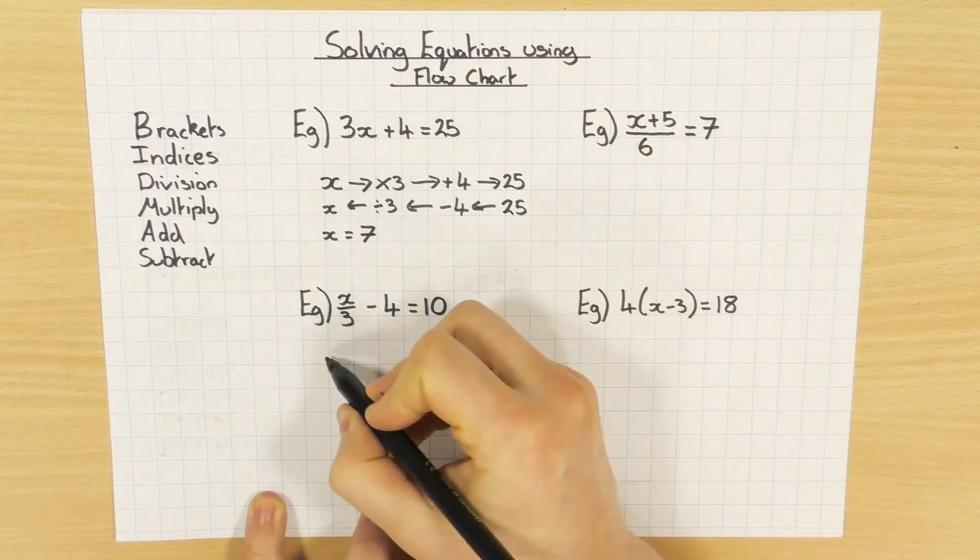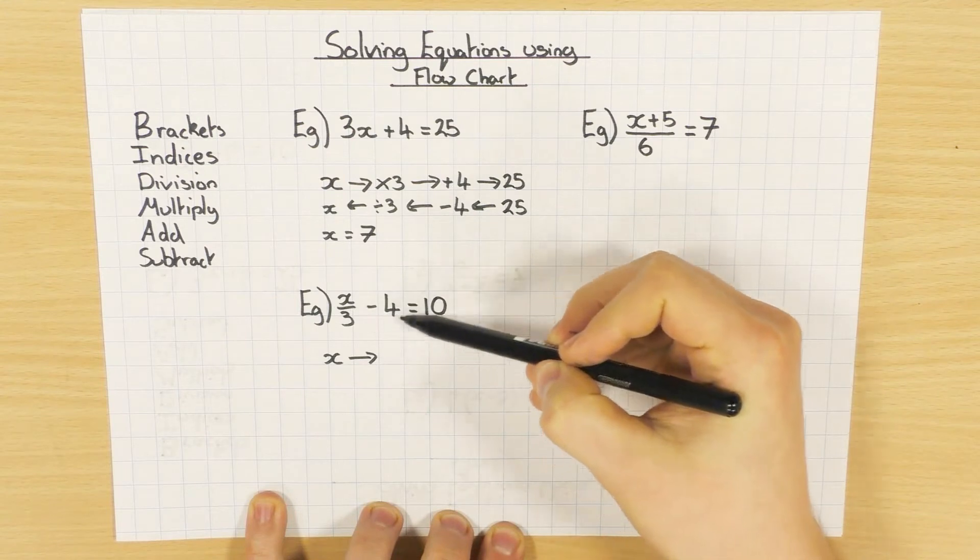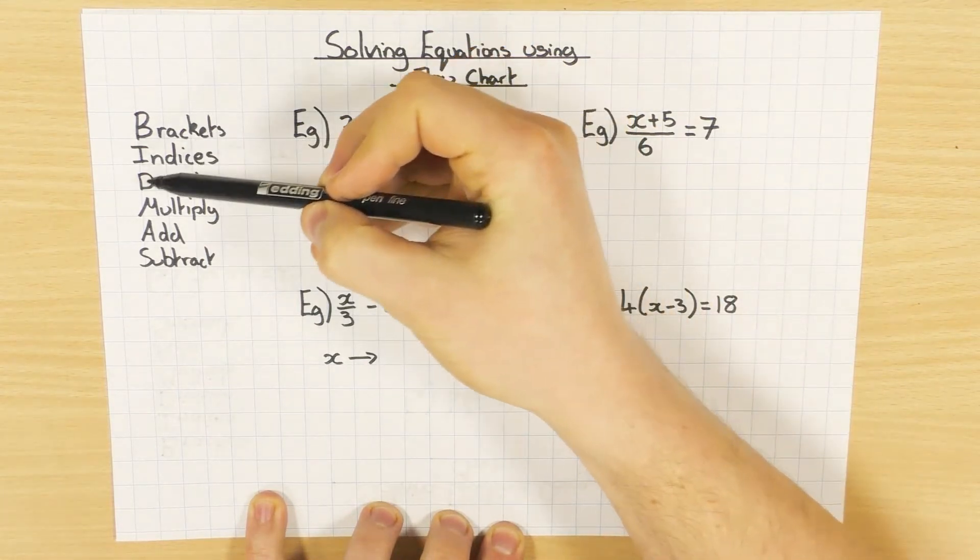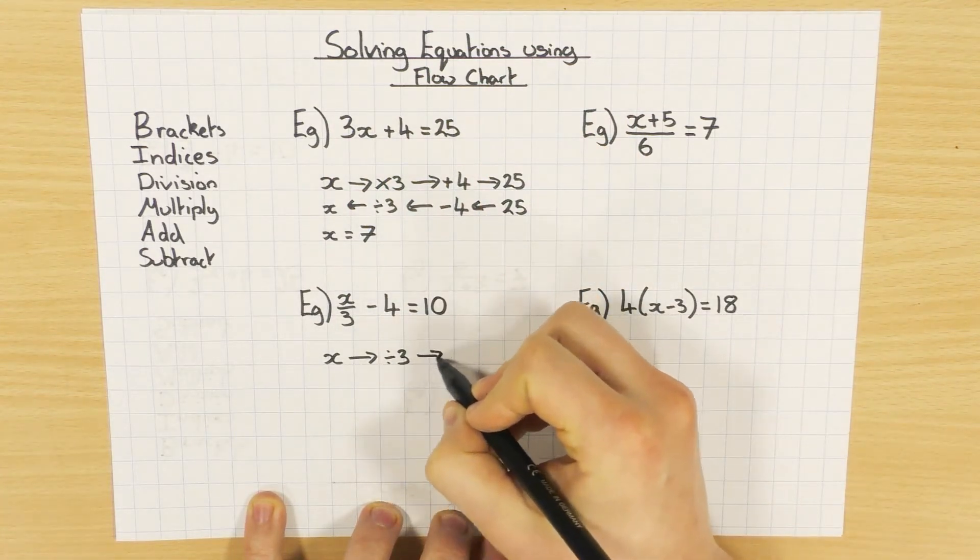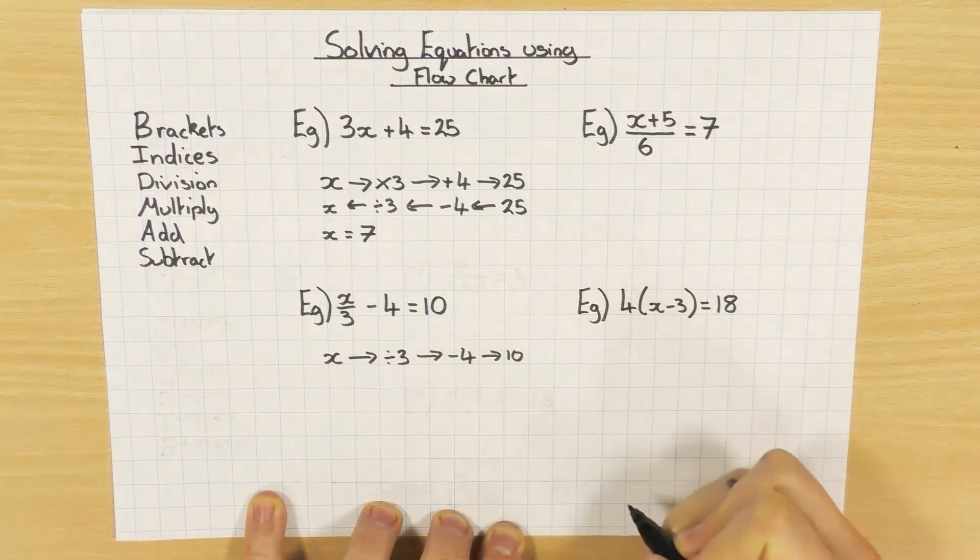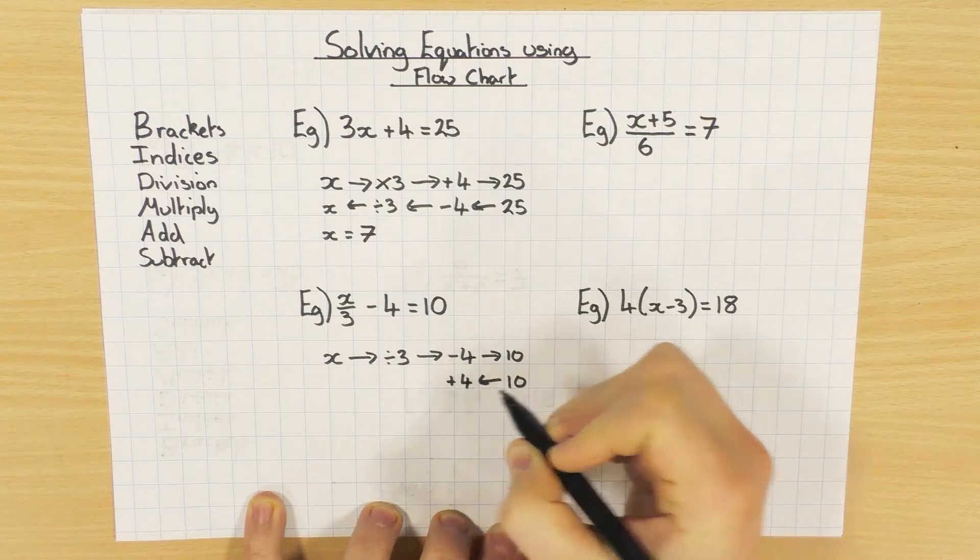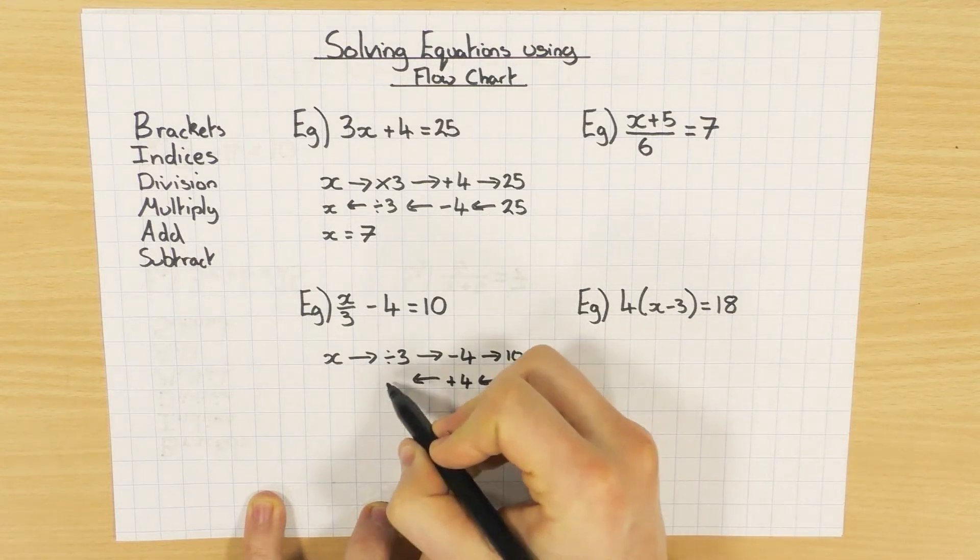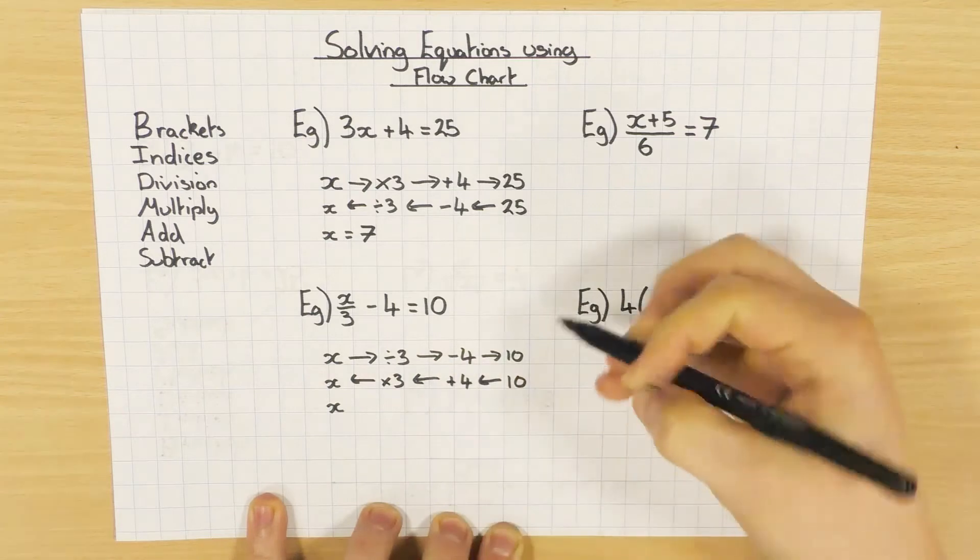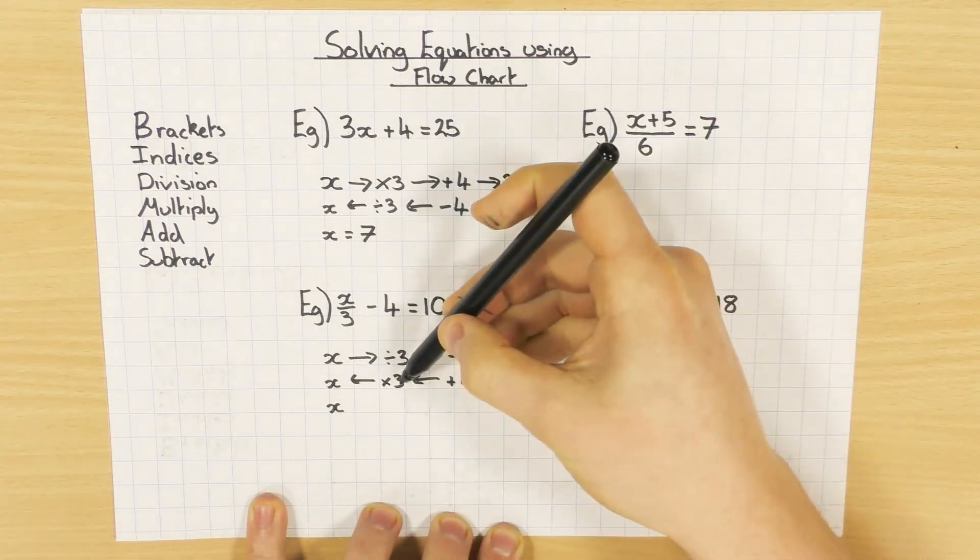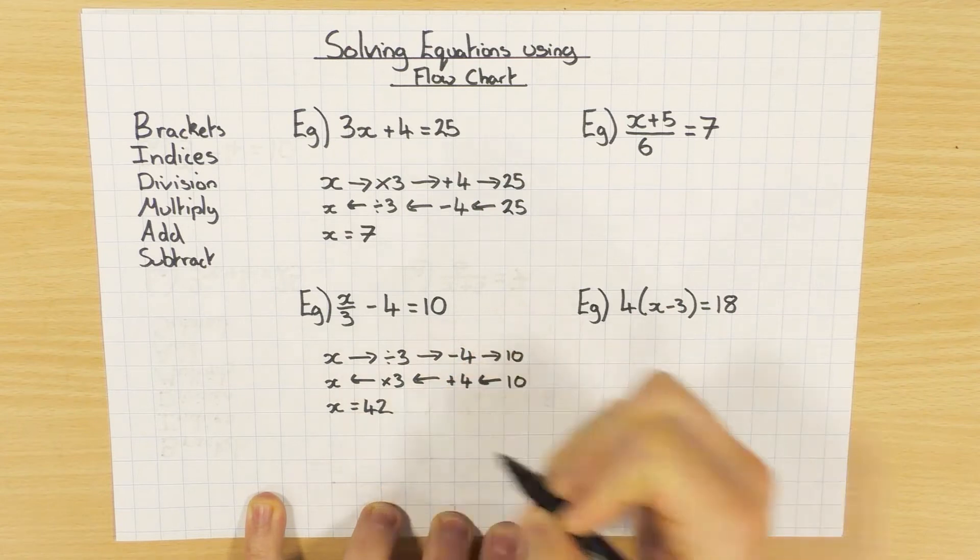So let's have a look at this one. Again, I'm going to try and work out what x is. Currently I've got x, and I'm dividing it by 3 and I'm taking away 4. So I go over to BIDMAS. Division is above subtraction, so I'm going to divide by 3 first, then I'm going to take away 4, and that leaves me with 10. So to go backwards, 10, I do the opposite. I add 4, then I go over here and I do the opposite, and I times by 3, and I get back to x. So 10 plus 4 is 14, times by 3, or 10 times 3 is 30, 4 times 3 is 12, add them together, we have 42.